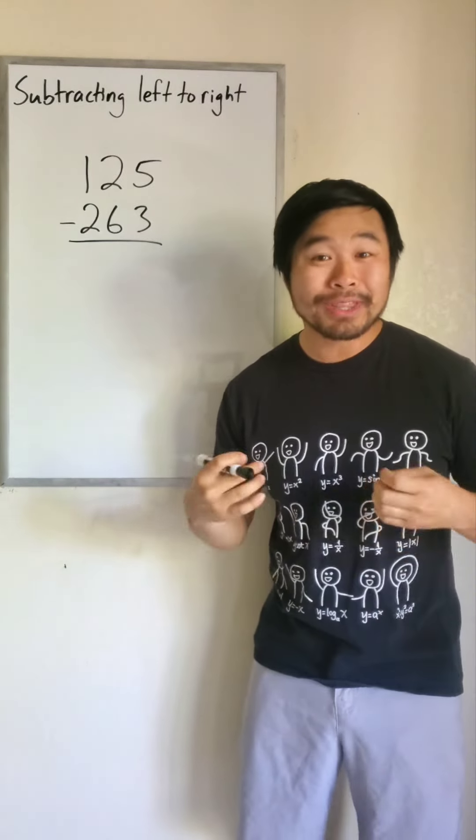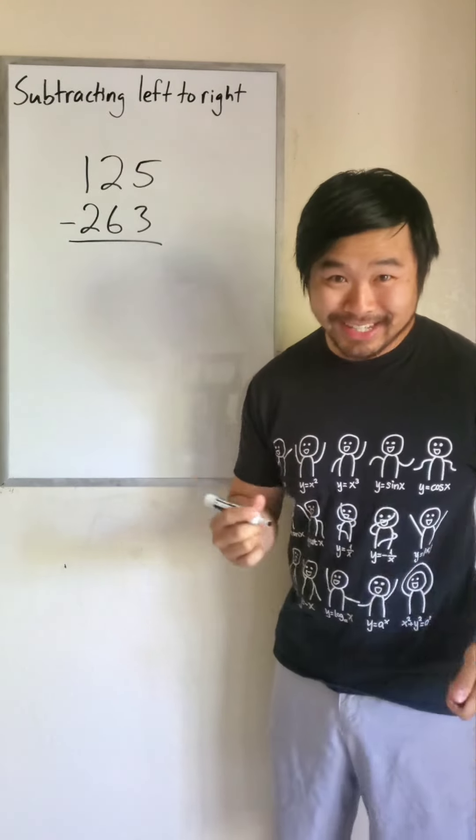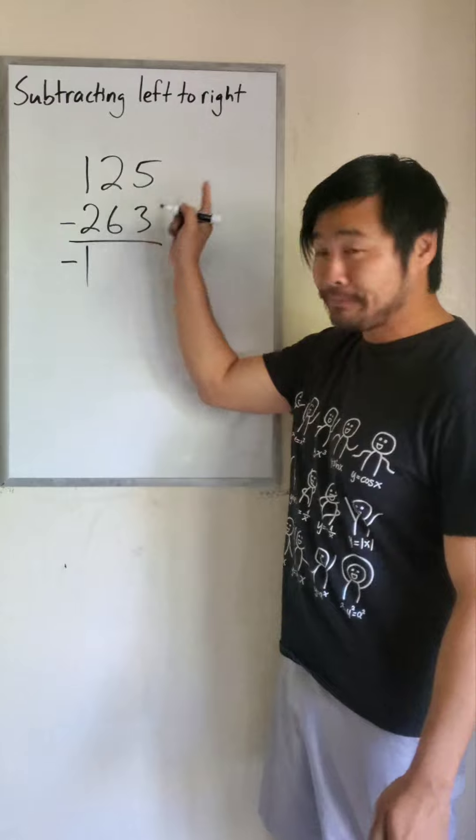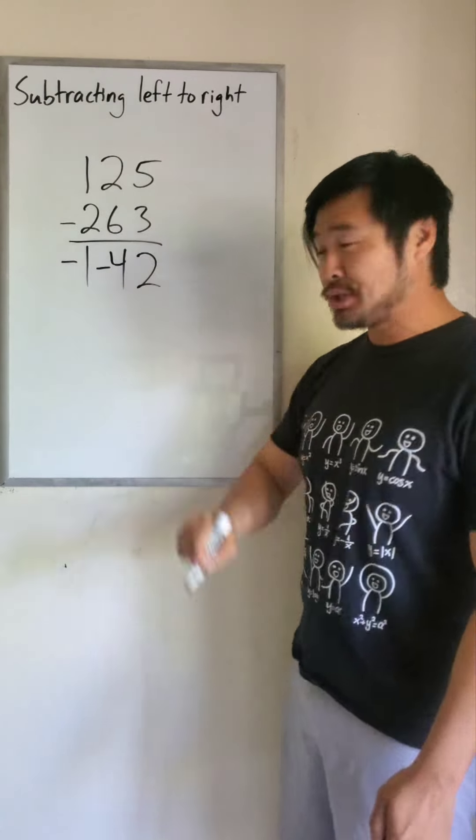Now let's do another one where the answer is negative. Let's do 125 minus 263. 1 minus 2 is negative 1, 2 minus 6 is negative 4, 5 minus 3 is 2.